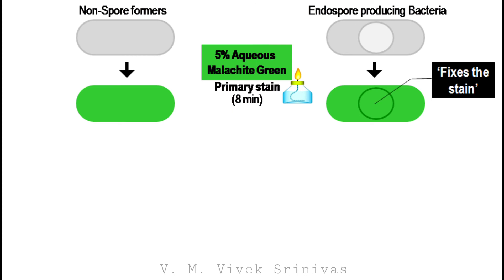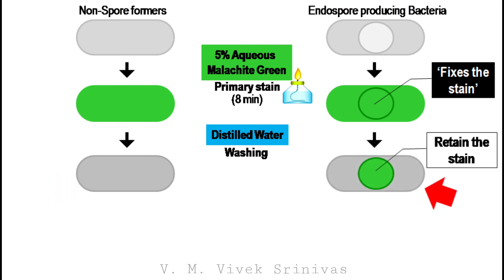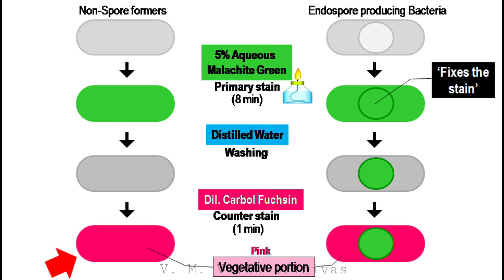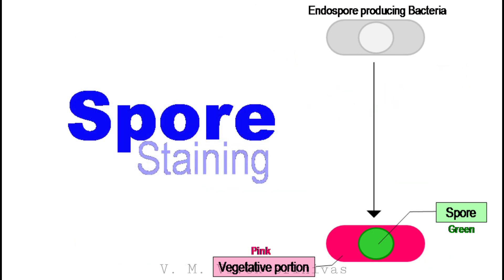But only the spore portion of the spore-forming bacteria fixes the primary stain. After heating, wash the smear with distilled water. It decolorizes the primary stain easily from the non-spore-forming bacteria, but the spore portion of the spore-forming bacteria retains the primary stain. Lastly, on use of the counterstain — dilute carbol fuchsin — that gives pink color to the non-spore-forming bacteria and to the vegetative portion of the spore-producing bacteria. So on spore staining, the endospores are stained green, and the vegetative portion of the spore-forming bacteria are stained pink.